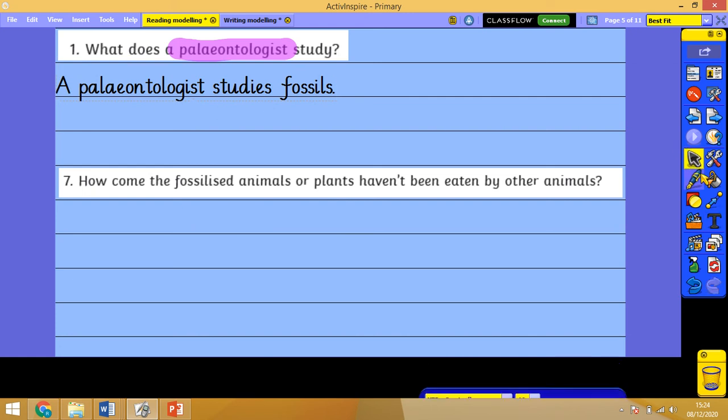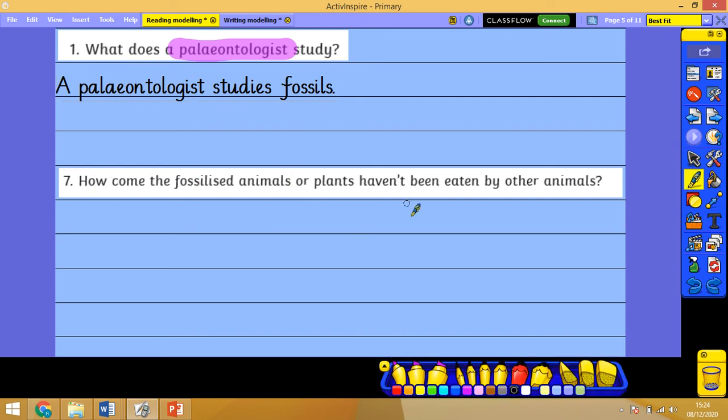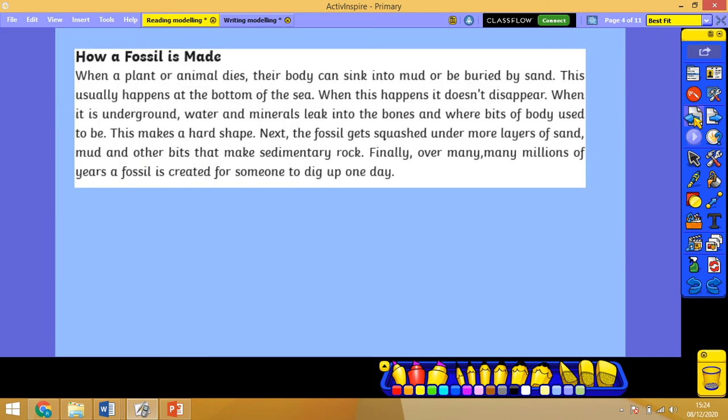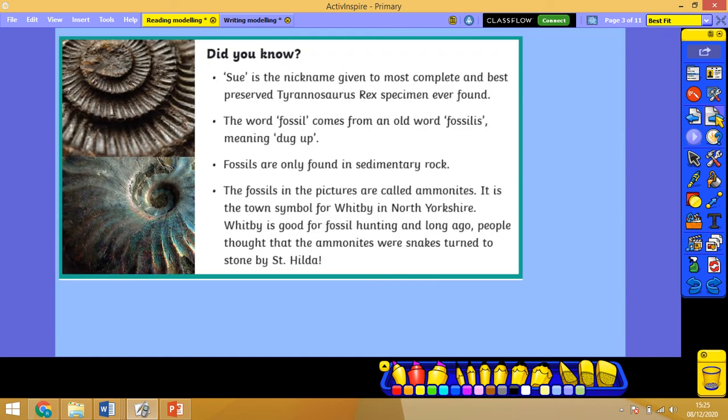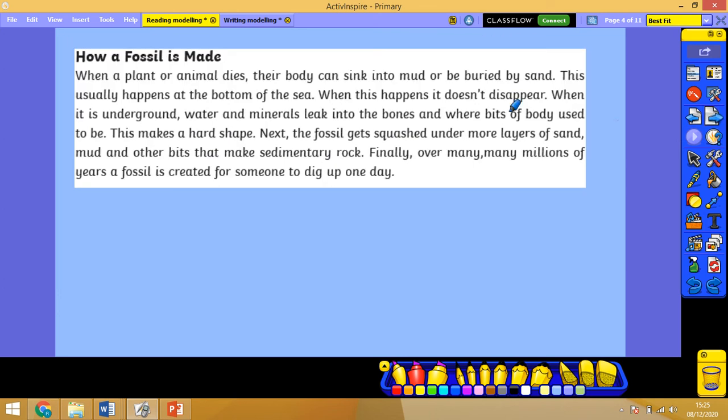So next one. How come the fossilized animals or plants haven't been eaten by other animals? Now this is a slightly more difficult question, so I'm focusing in on this bit and this bit here. Fossilized animals or plants haven't been eaten by other animals. So I'm going to go back to the beginning. Well, this just gives me a bit on dinosaurs and an introduction, nothing useful there. So I'm seeing a lot of the word fossil there, but nothing about animals eating things.